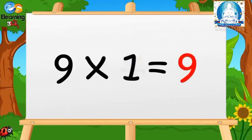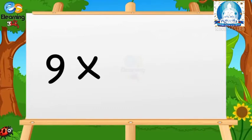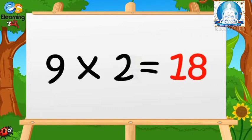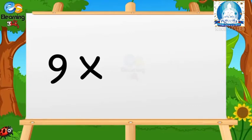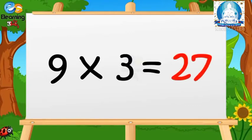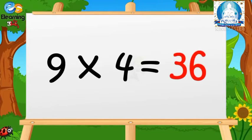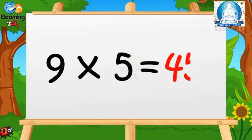Nine ones are nine. Nine twos are eighteen. Nine threes are twenty-seven. Nine fours are thirty-six. Nine fives are forty-five.